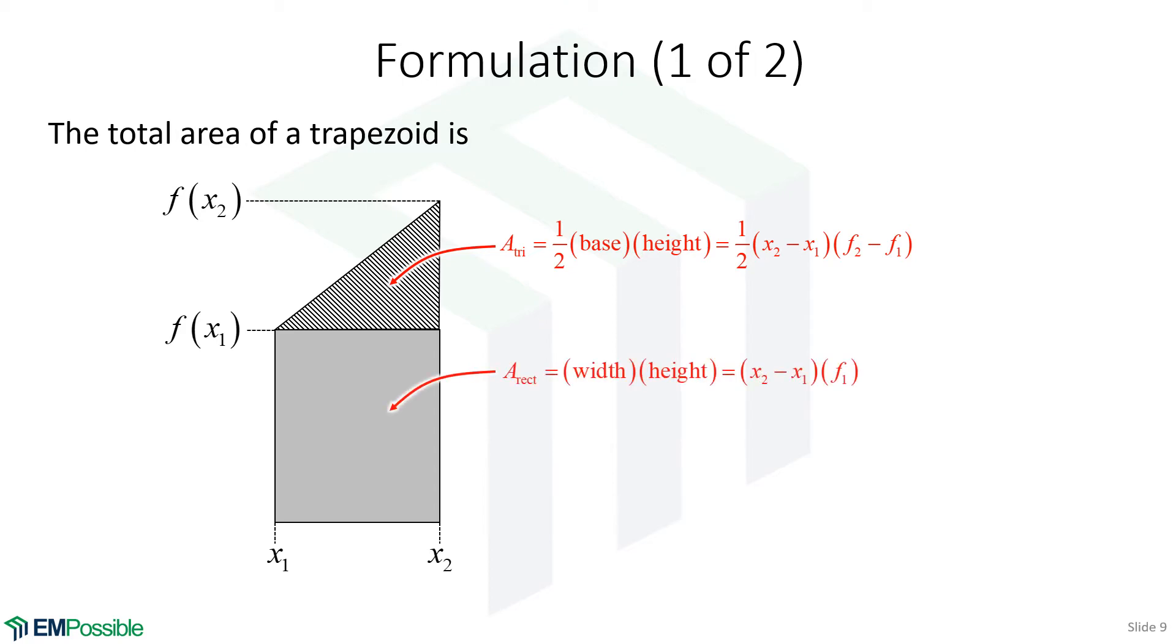Second, we have the area of the rectangle. That's width times height. And the width, again, is x2 minus x1. And the height, since we're down at zero here, is just f at x1, or simply f1. So we have the area of the rectangle.